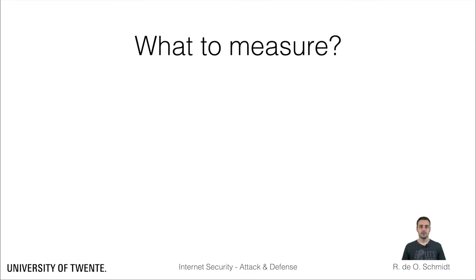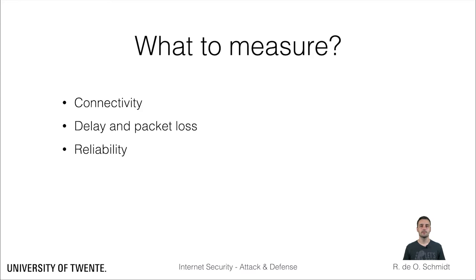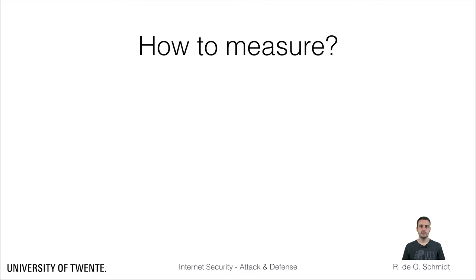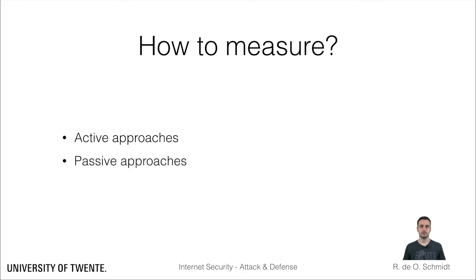But what do people measure? This can also vary. There are multiple metrics and targets we can measure in the Internet. These range from connectivity between autonomous systems and networks, to packet loss and even reliability and application usage. It depends on what, why, and how we are measuring. And speaking of how, there are two types of Internet measurements: active and passive approaches.